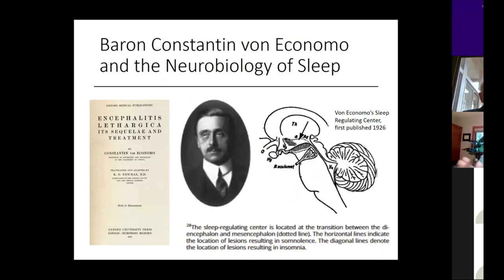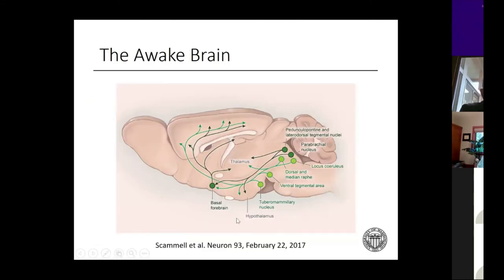Now into the neurobiology. There was a Viennese neurologist back in 1916–1917 who noticed people after viral illness were developing either excessive sleepiness or inability to sleep. His detailed neuropathological studies showed that those with excessive sleepiness had lesions in their dorsolateral hypothalamus, and those having trouble falling asleep had lesions in their anterior hypothalamus. This was way ahead of its time — these really are the areas of the brain crucial to sleep and wake.